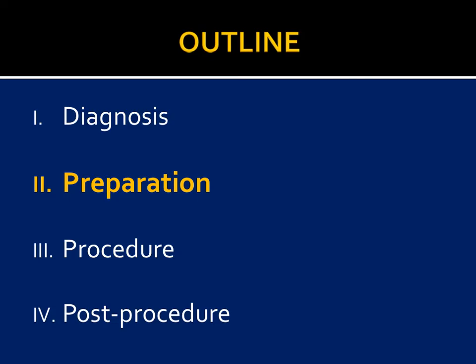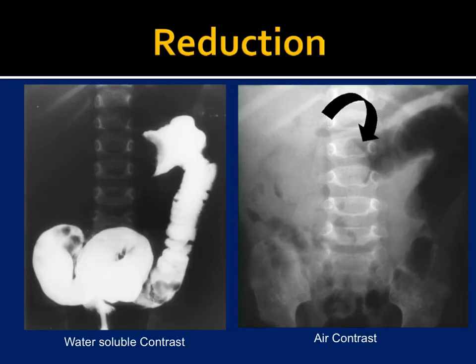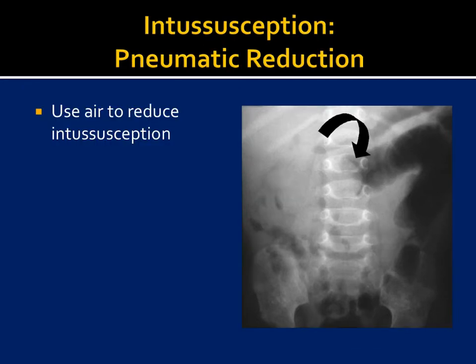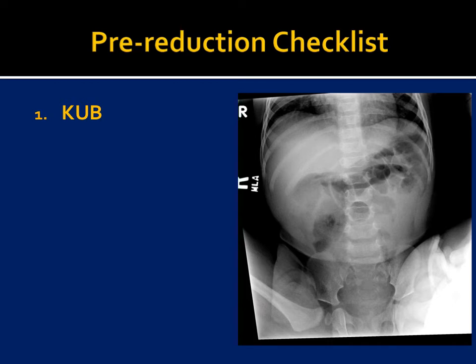For procedure preparation, we can use either water-soluble contrast or air contrast enema. The national standard of care is air contrast reduction, so I'll be focusing on that. Air has the most pushing power and overall uses less radiation because the automatic exposure control in the fluorotower isn't trying to penetrate through contrast. We want a KUB beforehand to look for any large intraperitoneal air prior, which is an absolute contraindication. Sepsis is another absolute contraindication. If we see a lot of gas on the KUB, we may opt for water-soluble contrast.